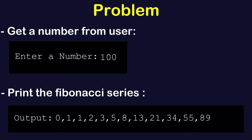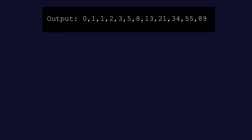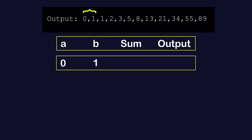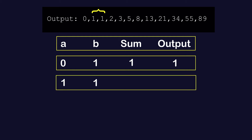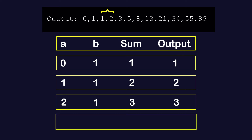Let's try to find the solution for this program. The first question is: what is a Fibonacci series? A Fibonacci series is a series of numbers in which each number is the sum of the two preceding numbers. Zero and one are the beginning, then the next is the sum of zero and one. Then two is the sum of one plus one, then three is two plus one, then five is three plus two, and this goes on until the limit we decide.